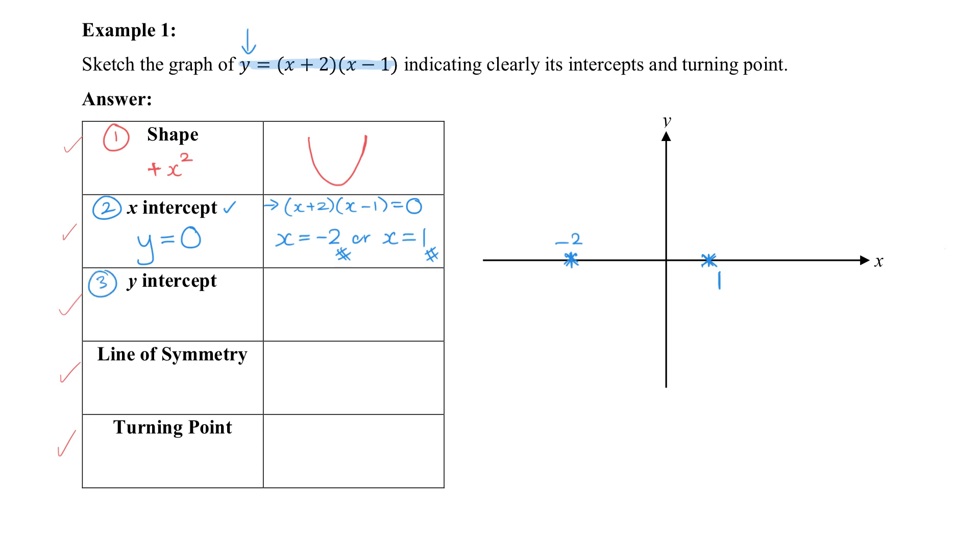Next, y-intercept. Conversely, if for x-intercept, we let y be 0, this one, we're going to let x be 0. And again, a substitution exercise. So when x is 0, using the equation above, I'm going to get 0 plus 2 times 0 minus 1, which gives us negative 2. So, I am going to plot negative 2 on the diagram. I think it's going to be somewhere here. So we have 3 pieces of points that we know for sure that the curve is going to pass through.